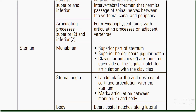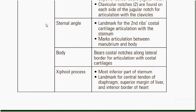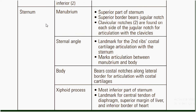Articulating processes include two superior processes and two inferior processes; they form the zygapophyseal joints with articulating processes on adjacent vertebrae. The sternum parts include the manubrium, sternal angle, body, and xiphoid process.